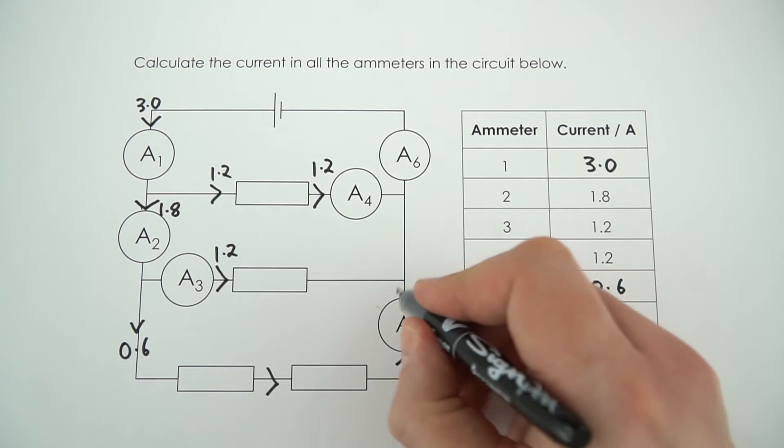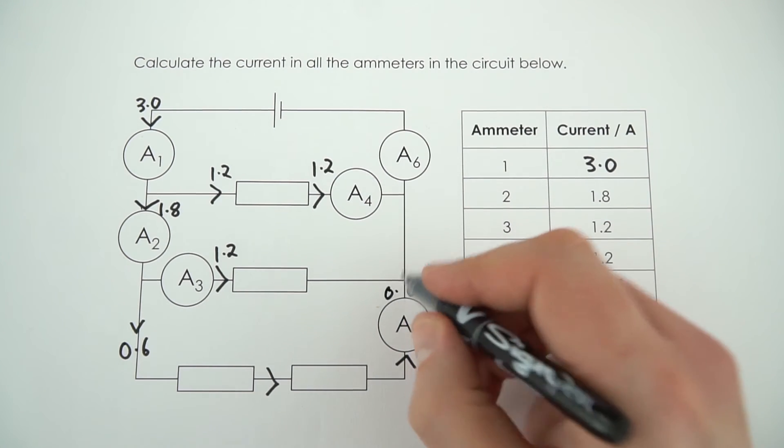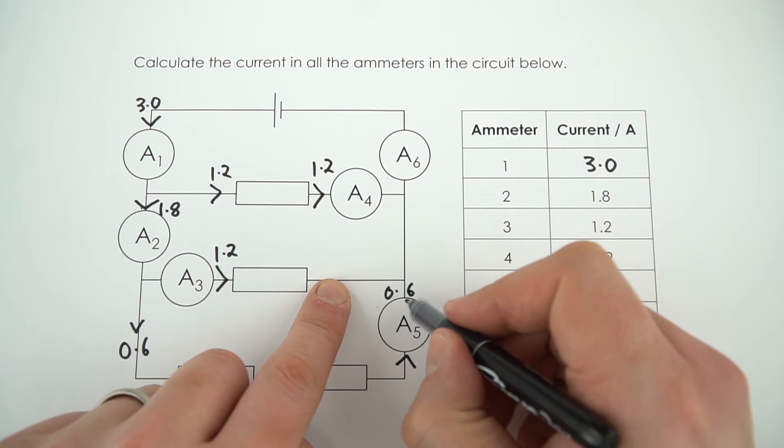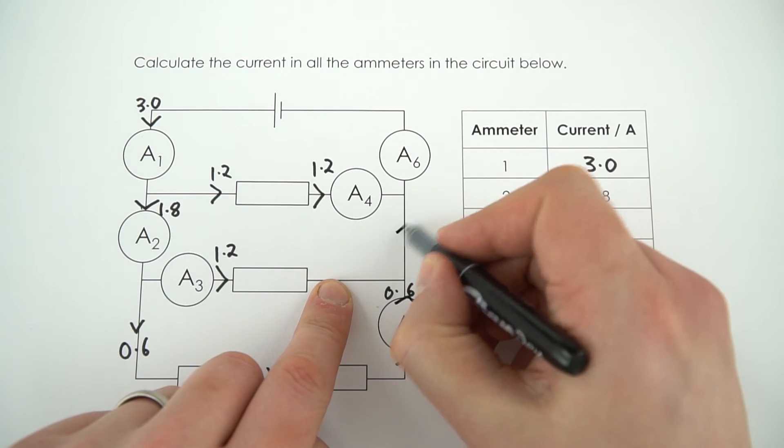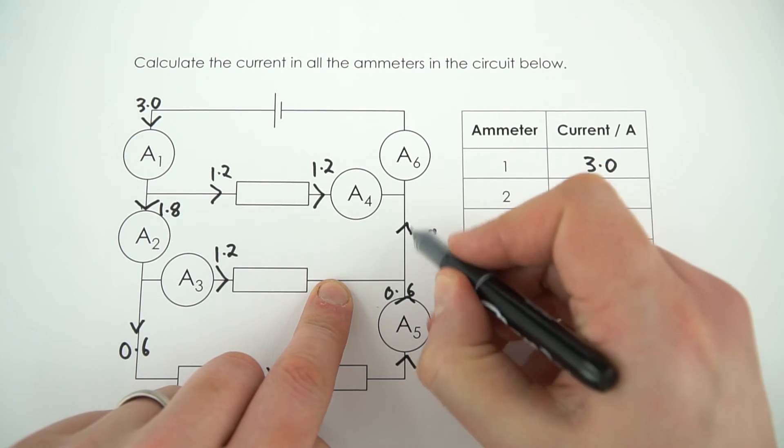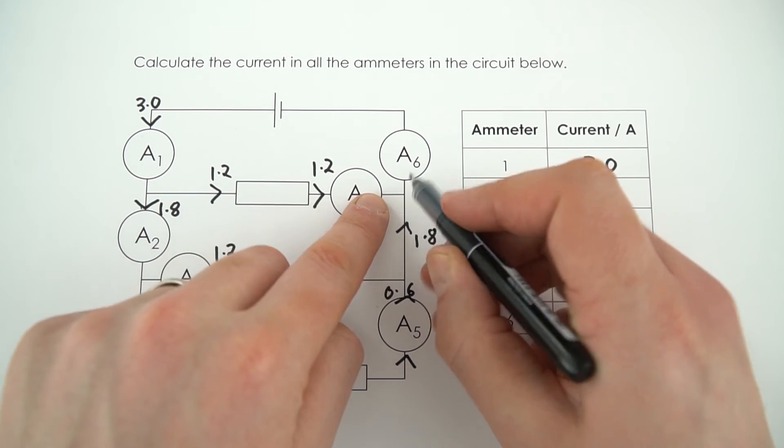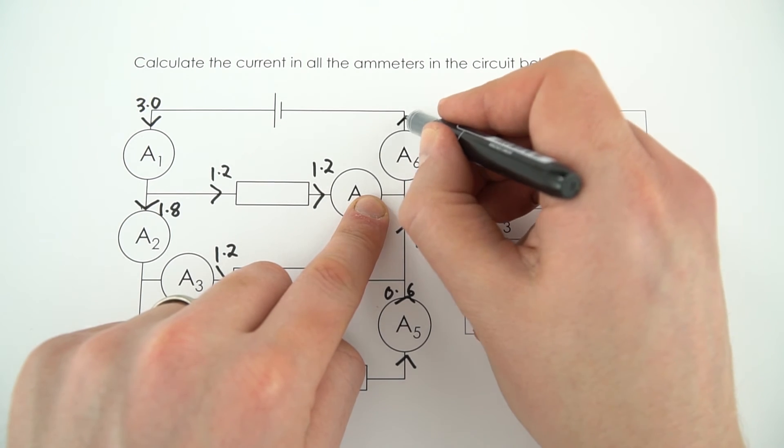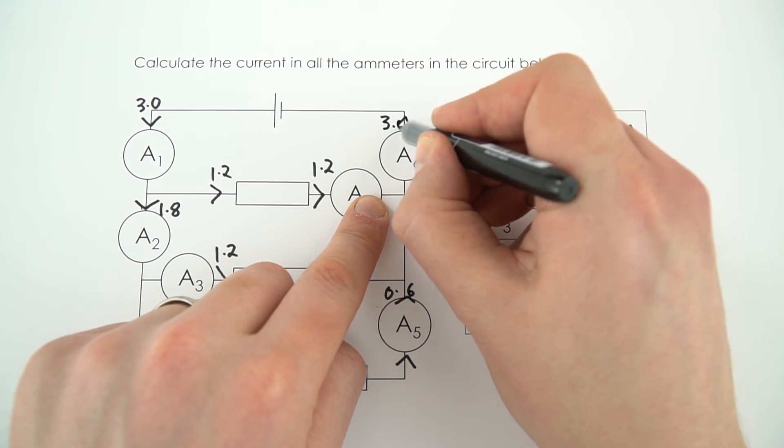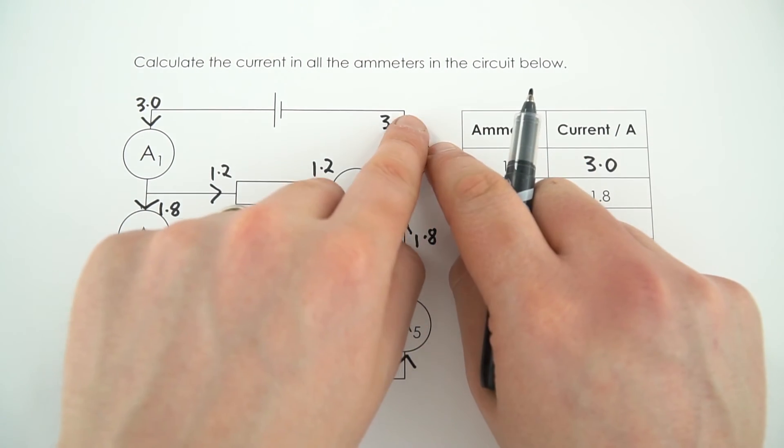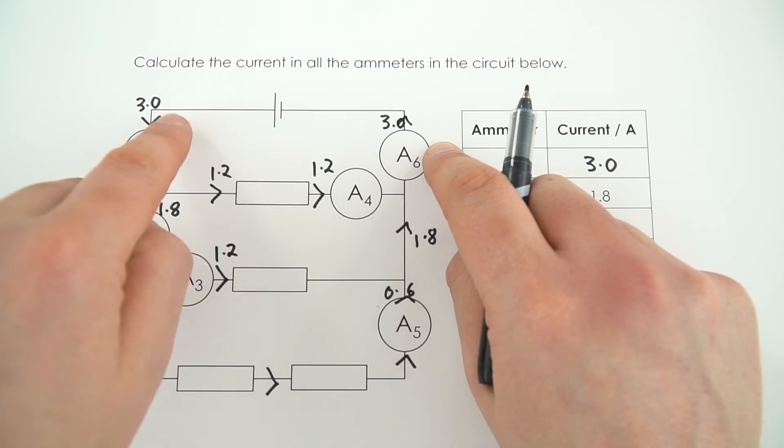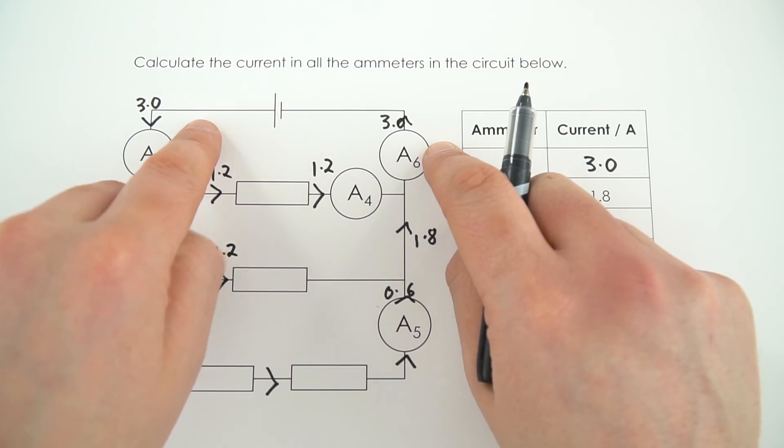At this point we've got 0.6 here that adds to the 1.2 to make 1.8 going up here, and then 1.8 added to 1.2 means that going through ammeter 6 you've got a value of 3.0. That's the same current going into the cell as coming out, so you've got 3 there and 3 there.